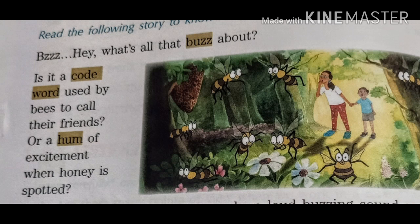Here the writer has used a new word: hum. Hum is a low continuous sound made by insects. Children, you might have experienced the sound of a mosquito nearby your ears — like zzzzzz, isn't it? This low continuous sound is called hum.